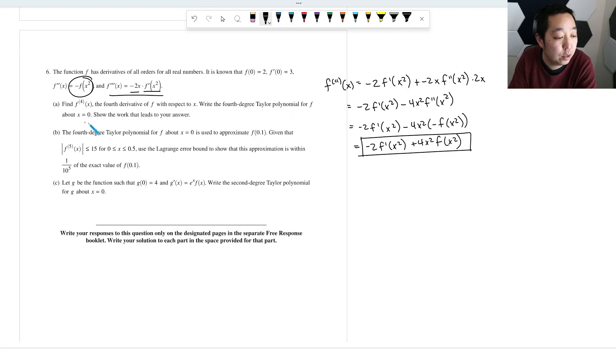Write the fourth degree Taylor polynomial about x equals 0 and show your work. So fourth degree Taylor polynomial is going to be f(0) + f'(0)/1! x¹ + f''(0)/2! x² + f'''(0)/3! x³. It's a Maclaurin series when you do x equals 0, basically. Then f⁽⁴⁾(0)/4! x⁴. Now what are these? We know f(0) is 2, so we know this is 2.